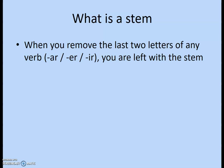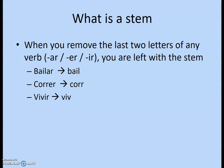So what is a stem? Not everybody knows what that is. When you remove the last two letters of any verb, you're left with the stem of that verb. For example, bailar minus the AR is bail. Correr without the ER is cor. And vivir without the IR is viv. So bail, cor, and viv are the stems.